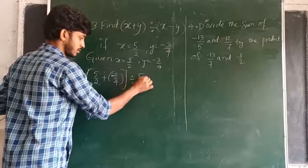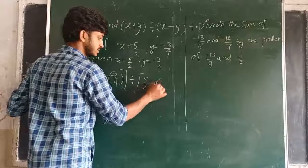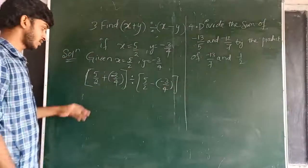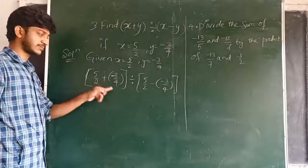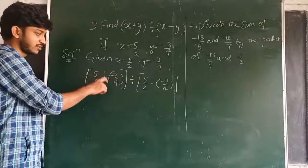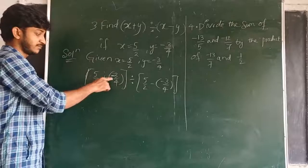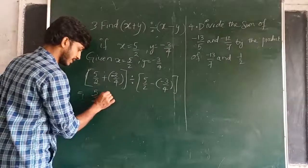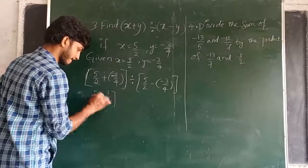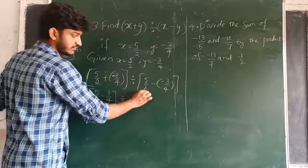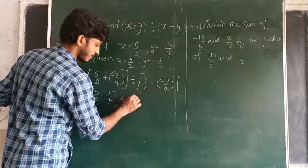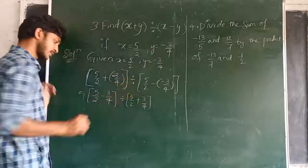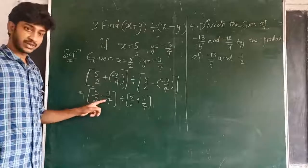Divided by 5 by 2 minus minus 3 by 4. Now, 5 by 2 plus minus 3 by 4 — plus into minus gives minus — so we have 5 by 2 minus 3 by 4. In the denominator, minus into minus gives plus, so we have 5 by 2 plus 3 by 4.